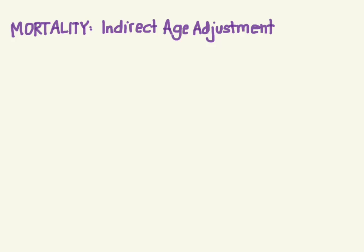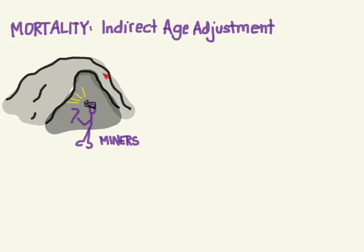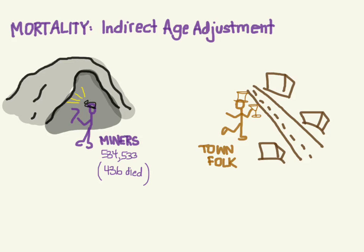The classic example is of an occupationally exposed population. So let's say we have a small town in which there's a good deal of population that works in the coal mine — we have a bunch of miners. In fact, we have about 534,533 miners in this town, and 436 of them died. So you're starting to wonder: is there something in the mine that's killing these people? Is this 436 consistent with the death rate of the town in which they live? Our question is: is this death rate here the same death rate as we're seeing in town?